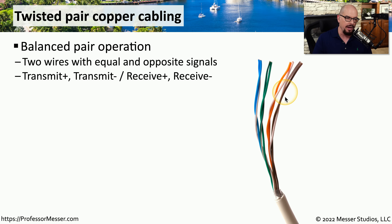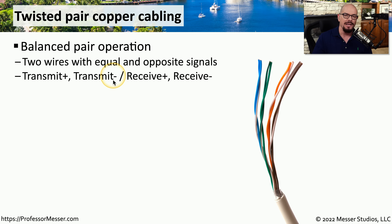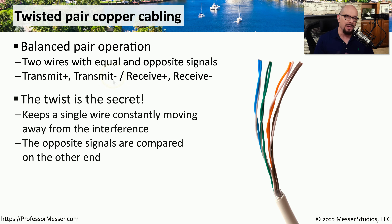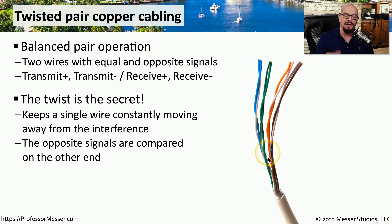And solid brown and brown and white. These pairs of wires contain equal and opposite signals to each other — sometimes referred to as transmit plus and transmit minus. We combine this difference in signal with a twisted cable to get information from one side of the network to the other. The signal going through this wire is constantly twisting, effectively moving away from any type of interference as it moves through the cable.